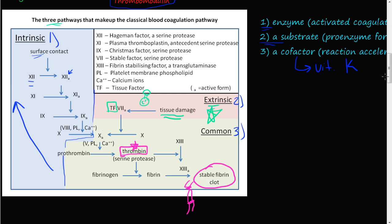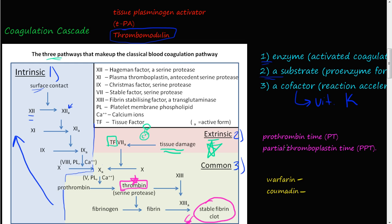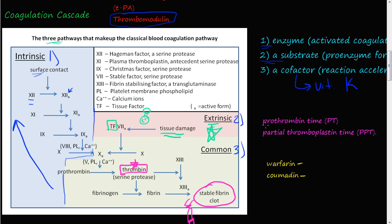That is pretty much the coagulation cascade in a nutshell. Before finishing, there are a couple more things to discuss: the prothrombin time (PT) and the partial thromboplastin time (PTT). We'll talk about those in the next video. If you're a healthcare provider and want to see how a drug is working on a patient with a bleeding disorder, you can run these tests to analyze the extrinsic and intrinsic pathways.